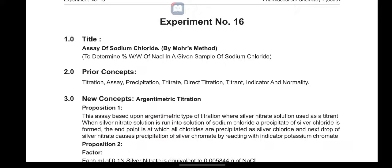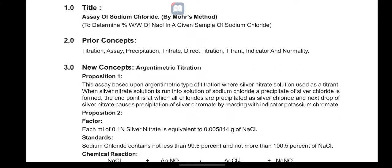The principle of this assay is based upon argentometric titration — a new type of titration. Silver nitrate solution is used as the titrant. The silver nitrate solution is run into the solution of sodium chloride, and a precipitate of silver chloride is formed.